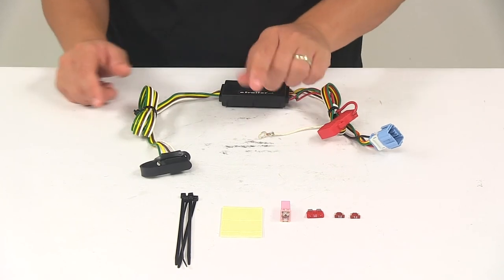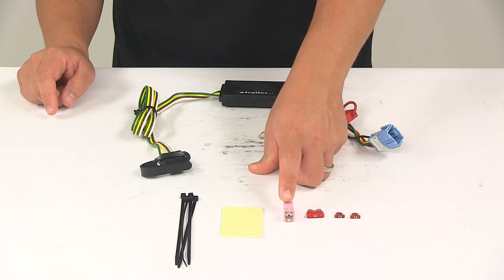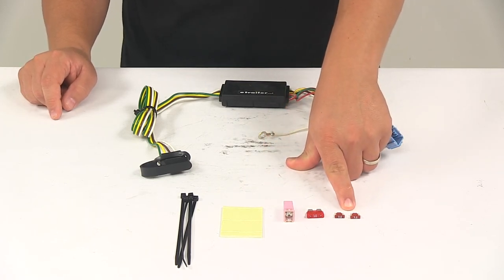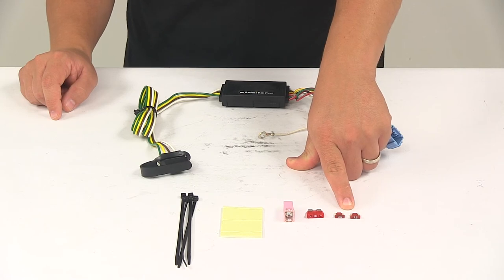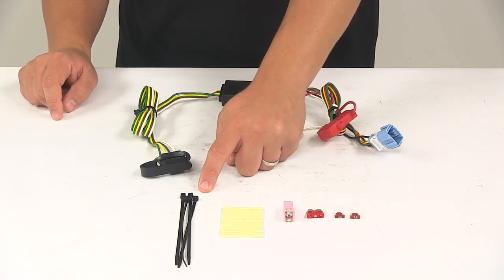After you get that done, you'll need to install the 30-amp cartridge fuse in position 12, and the two 7.5-amp mini blade fuses in position 10 and 11 in the rear fuse panel. Then you can secure any excess or slack in your wiring with the included cable ties.